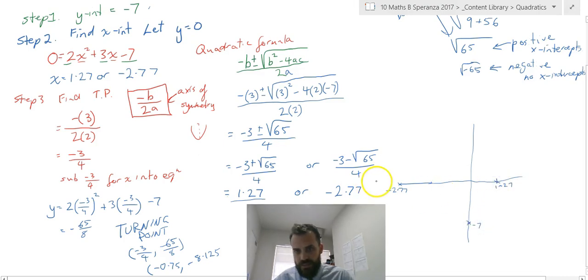So x-intercepts, and a turning point at negative 0.75, so that must be pretty close to here. That's also called our axis of symmetry, and a y of the turning point at negative 8.125.